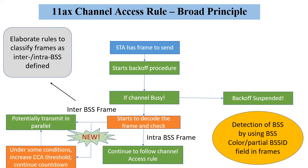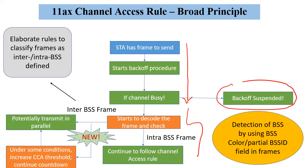At a broad level, what Wi-Fi is trying to do is: when we want to send, we sense the channel, and if we hit a Wi-Fi preamble we suspend our back-off and try to decode that frame. The small change now is that we distinguish intra-BSS and inter-BSS — I put quotes because there are lots of ideas on how we can classify intra and inter-BSS. When we have an inter-BSS detection, we can continue the back-off and transmit potentially in parallel. This is the new idea which solves the problem we had earlier.